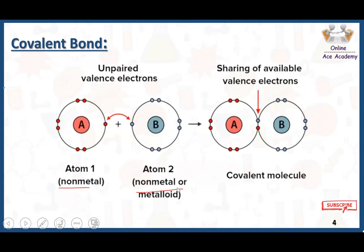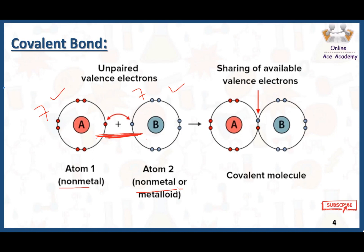Here you can see we have two non-metals — this is the first non-metal and this is the second non-metal. In both atoms A and B, there are seven electrons in the outermost shell. They both want to get stable but are unable to gain an electron and are unable to lose all seven electrons. So they simply share their electrons. This happens mostly in non-metals — they share one electron each because both need one electron to complete their octet. By mutually and equally sharing one electron from each side, they form a bond called a covalent bond.